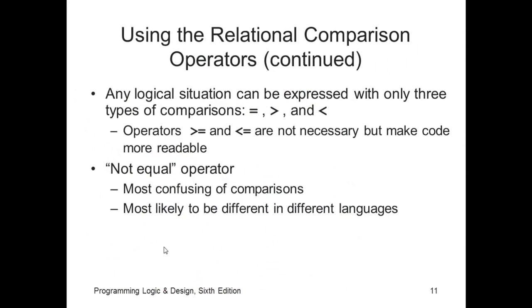Any logical situation can be expressed with only the three types of comparisons, equal to, greater than, and less than. So, technically, we could argue that you could throw out the greater than equal to and the less than or equal to. But that's kind of a debatable discussion. Now, here it says it makes the code more readable. I would argue that that really depends on the individual.